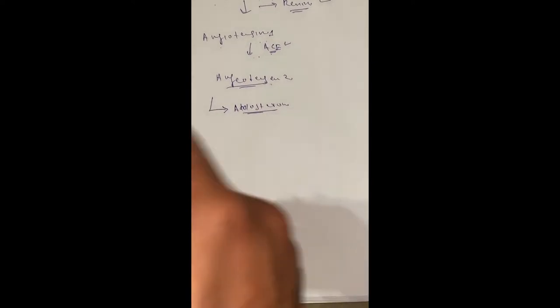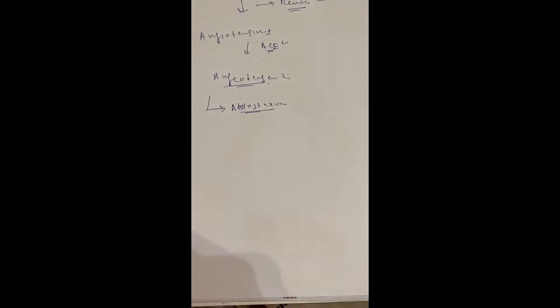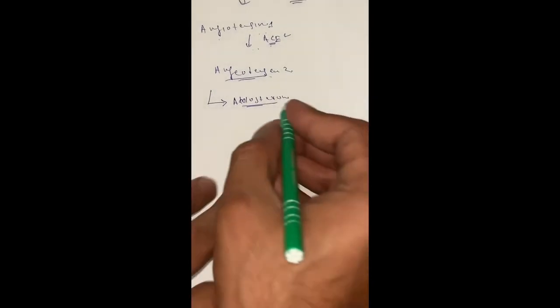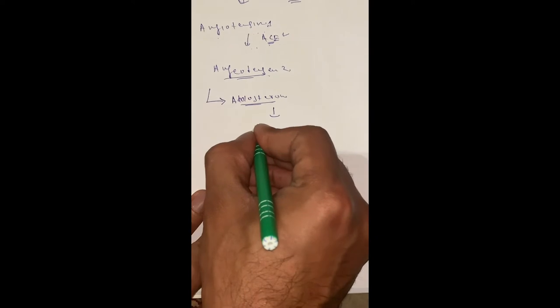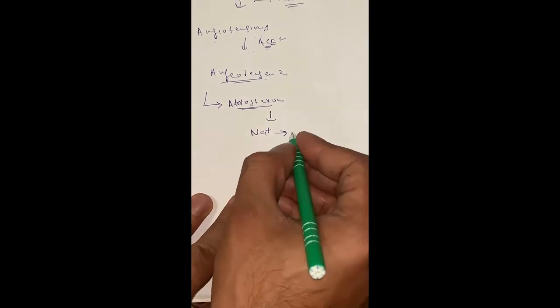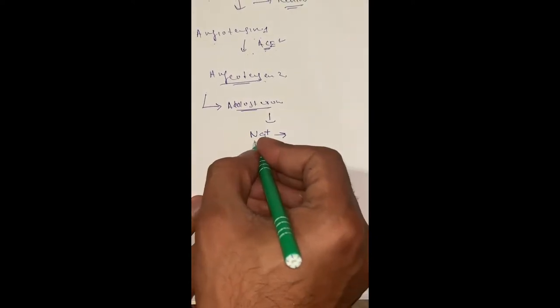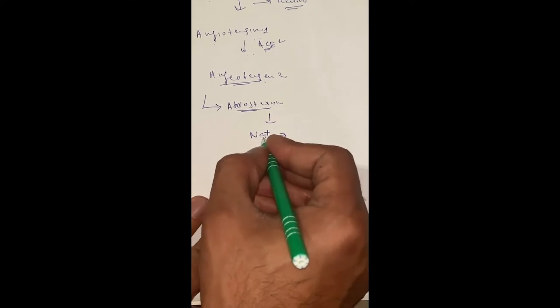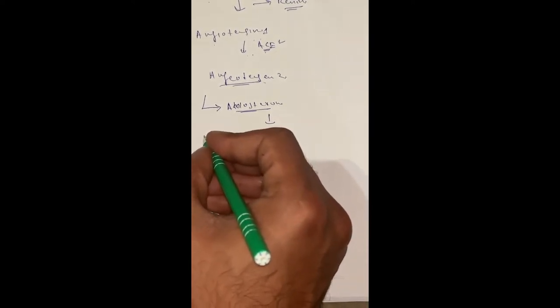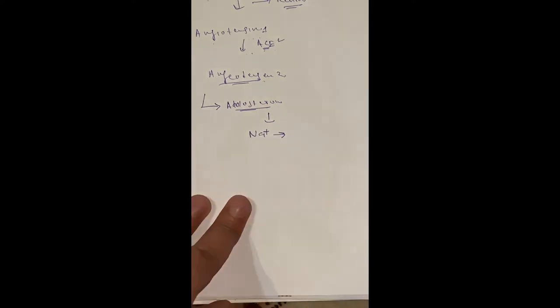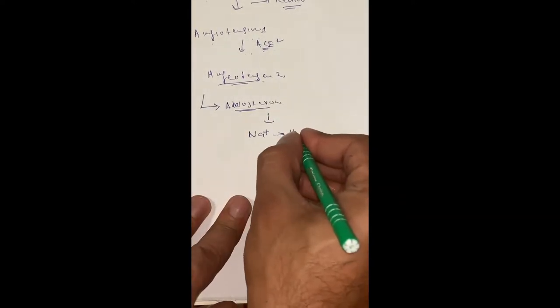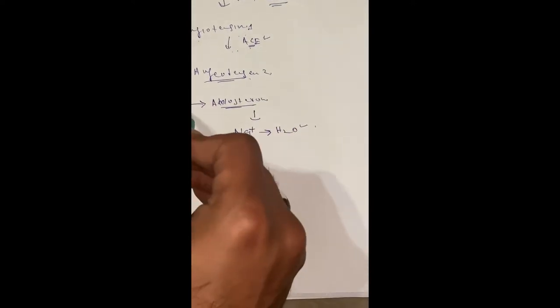This aldosterone causes the reabsorption of sodium into the blood. When sodium levels increase, water always follows sodium, so water also enters into the blood vessel. As a result, venous return will be high, cardiac output will be high, and the blood pressure will return to normal — with the help of aldosterone.